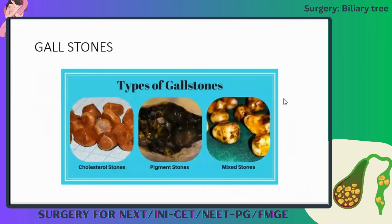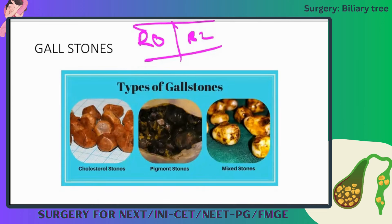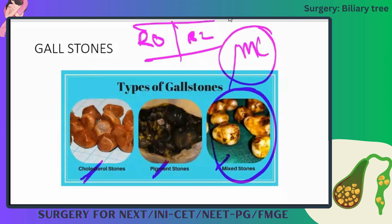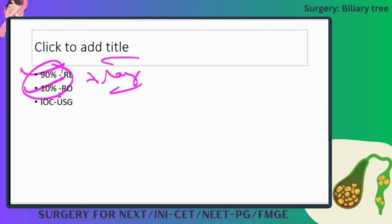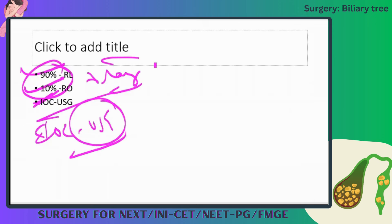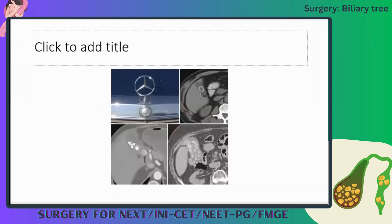Moving on to gallstones: 90% of gallstones are radiolucent and only 10% are radiopaque, so X-ray is not very useful. The investigation of choice is ultrasound. Types include cholesterol stones, pigment stones, and mixed stones — mixed stones being the most common. On CT scan, cholesterol stones can appear as a Mercedes-Benz sign.